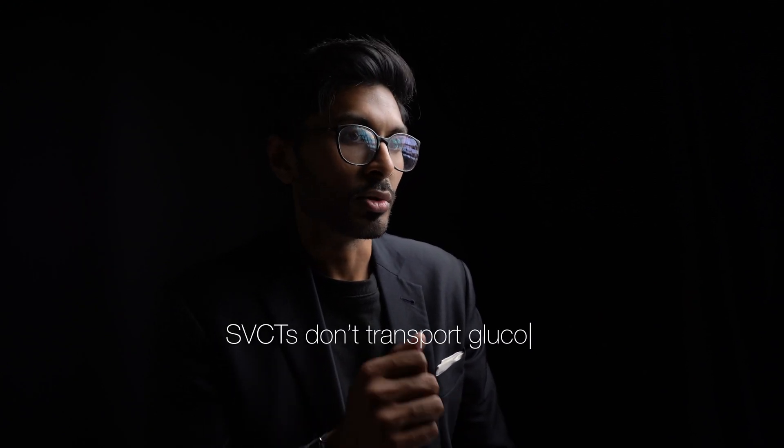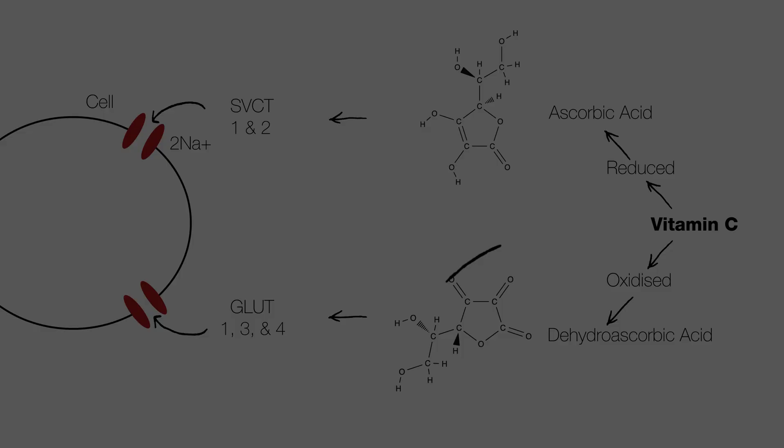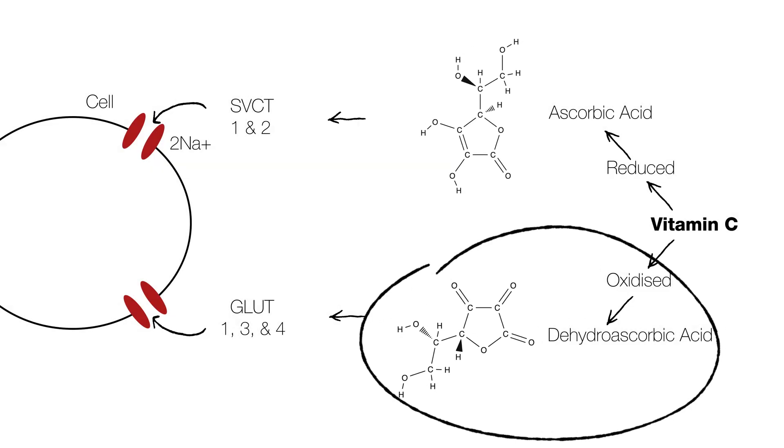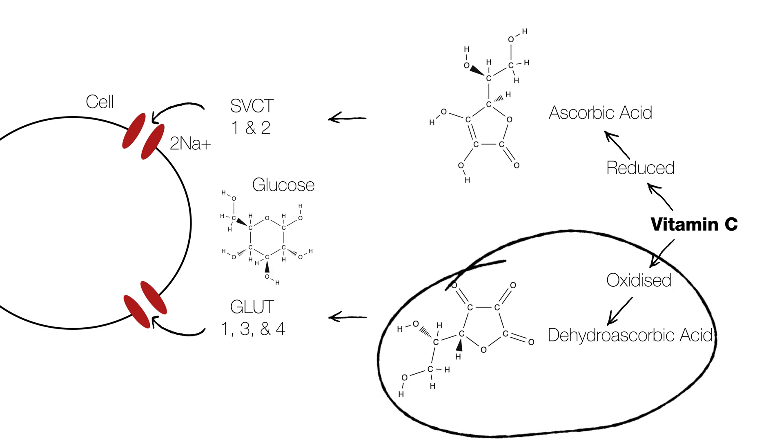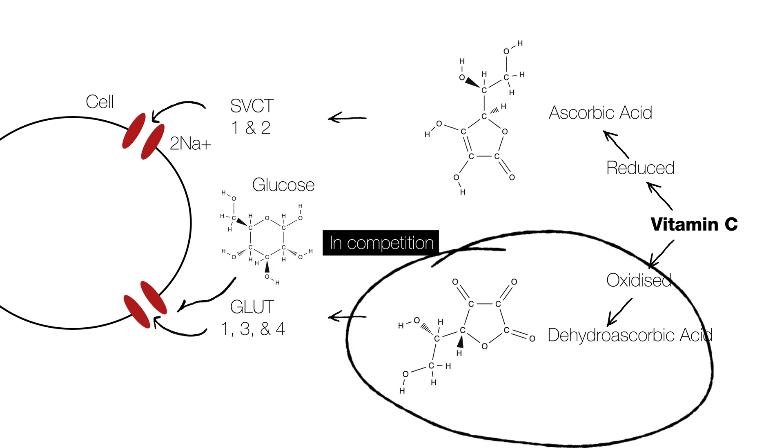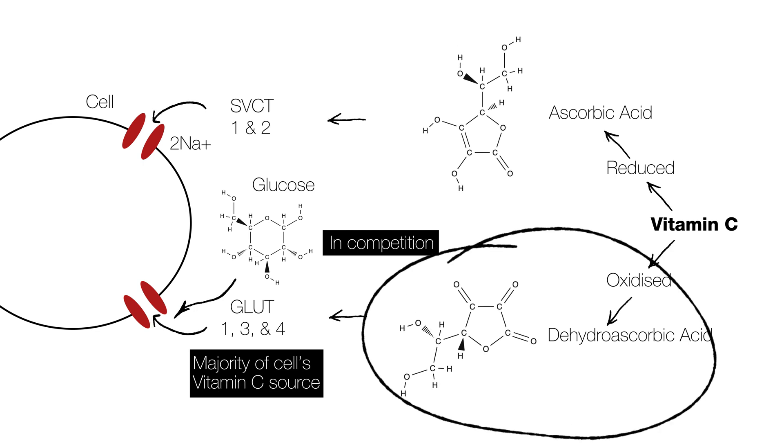However, remember that we also have SVCT1 and SVCT2 to allow vitamin C inside the cell. Glucose doesn't actually compete with ascorbic acid for SVCTs because SVCTs don't transport glucose. But even when these gates are open to vitamin C, we can still have affected vitamin C levels inside cells thanks to dietary carbohydrates, because dehydroascorbic acid — the oxidized form that comes in with GLUT1, 3, and 4 and is in competition with glucose — accounts for the majority of the cell's vitamin C source.